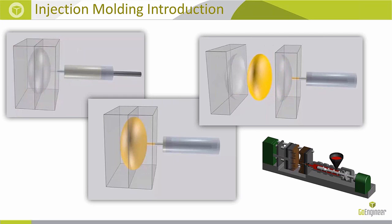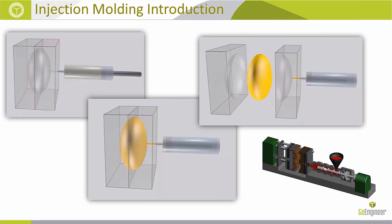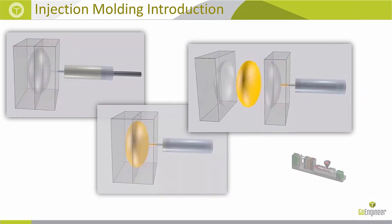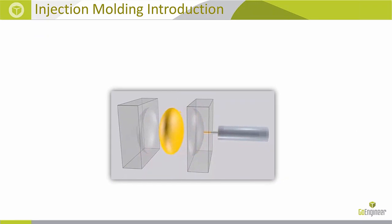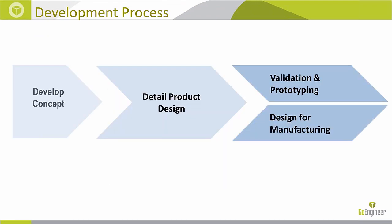Your typical development process starts with an initial concept, then you create a detailed product design with dimensions and specs. You do validation to ensure structural viability, but one thing that may be overlooked is design for manufacturing, which is very important.